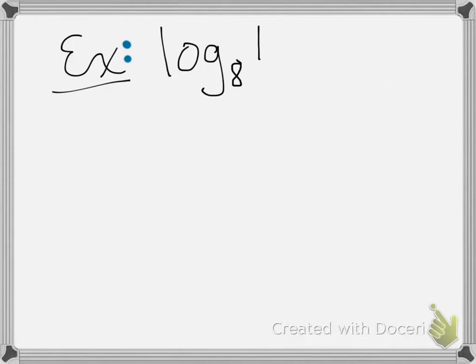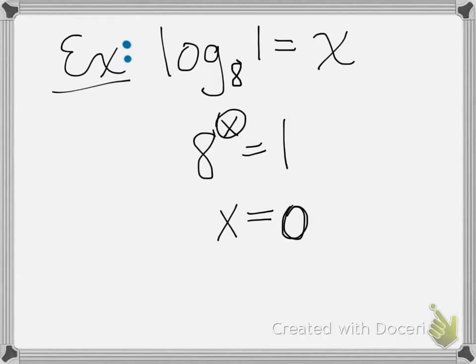Let's try this one. Log base 8 of 1. What does this equal? So I'm going to say it equals x. I'm going to rewrite it. 8 to the x power equals 1. And this may be a little bit harder for you, but 8 to what power equals 1? Well, we know there's only one exponent that can cause a number to equal 1, and that's 0. 8 to the 0 power would equal 1, because any number to the 0 power always equals 1. So log base 8 of 1 equals 0.